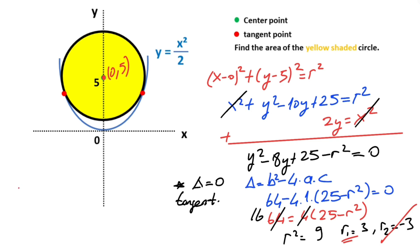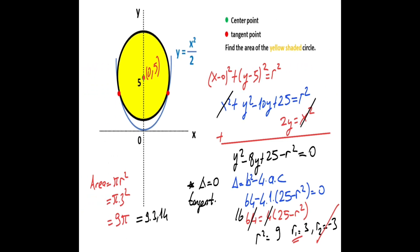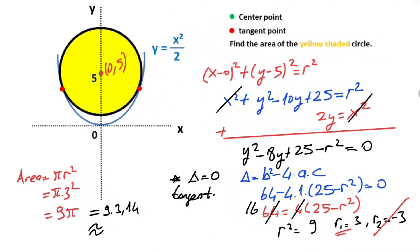Therefore, the value of the yellow shaded circle equals π × r². We know that radius equals 3, so π × 3² = 9π. It's also equal to 9 × 3.14, so it's approximately 28.26 square units.